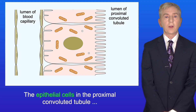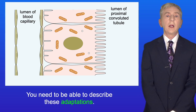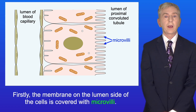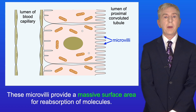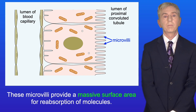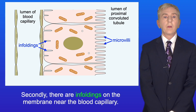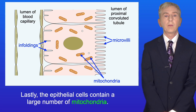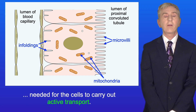The epithelial cells in the proximal convoluted tubule are adapted for efficient absorption of molecules, and you need to be able to describe these adaptations. Firstly, the membrane on the lumen side of the cells is covered with microvilli. These microvilli provide a massive surface area for reabsorption of molecules. Secondly, there are infoldings on the membrane near the blood capillary, which provide a large surface area for the transfer of molecules into the blood. And lastly, the epithelial cells contain a large number of mitochondria, which provide the ATP needed for the cells to carry out active transport.